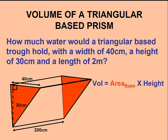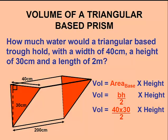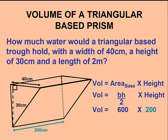We'll now use our formula to calculate the volume of this trough. Area of base times height. The base is a triangle, and we know its area is found by multiplying base times height divided by 2. It's 40 times 30 divided by 2, which is 600 cm squared. We need to multiply this by the height of the prism, 200 cm. So our volume is 600 times 200, 120,000 cubic centimeters.